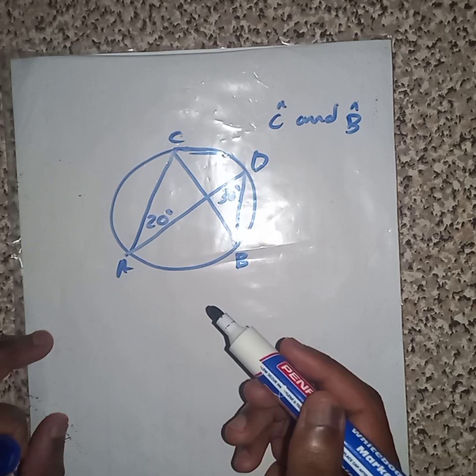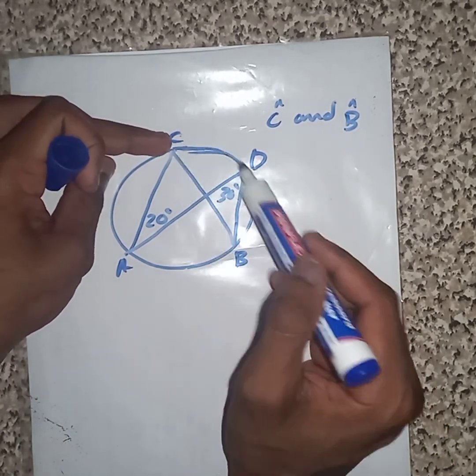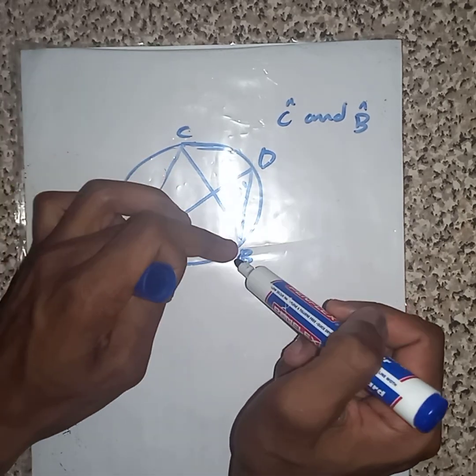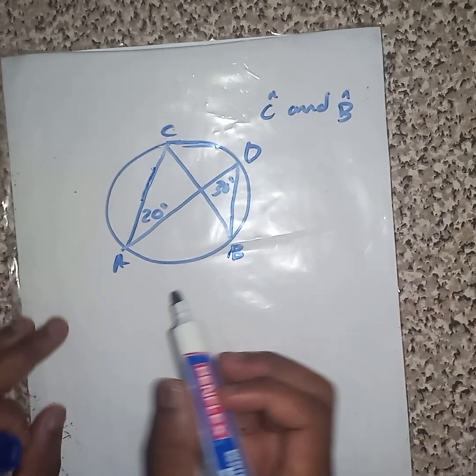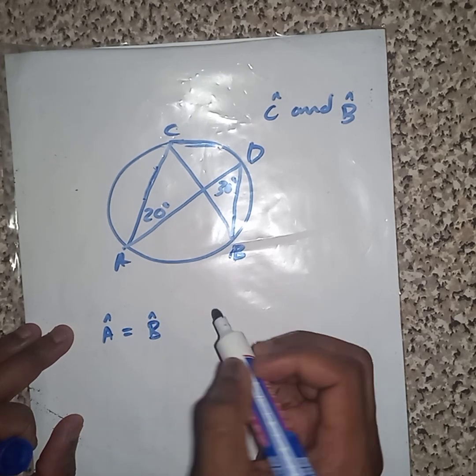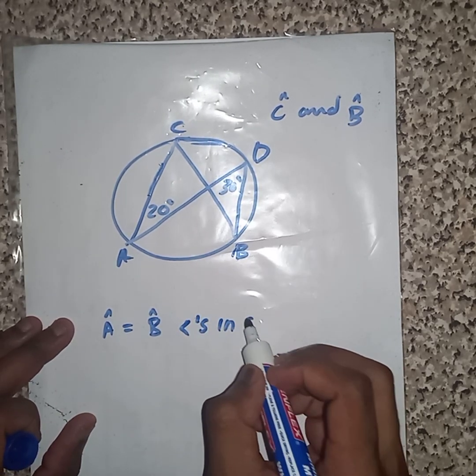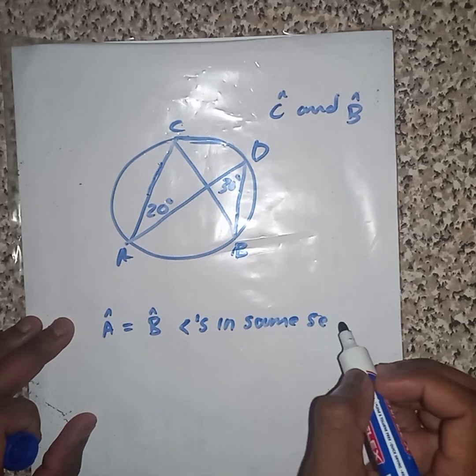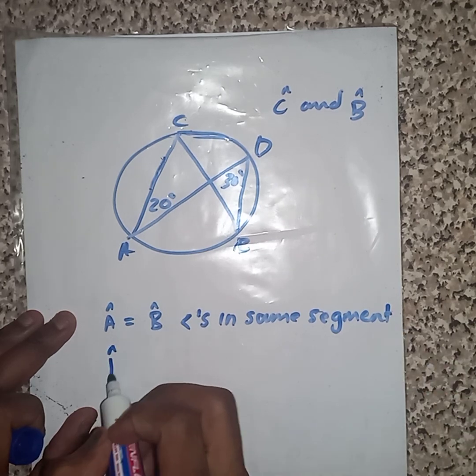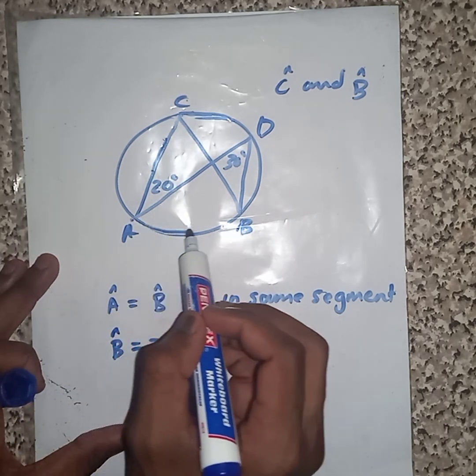See, check. Do you see arc CD? It subtends A and B. That means angle A is going to be equal to angle B. The reason: angles in same segment. And now my angle B is going to be 20 degrees.